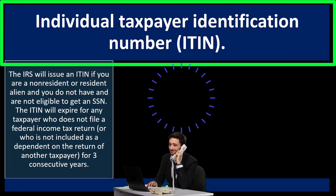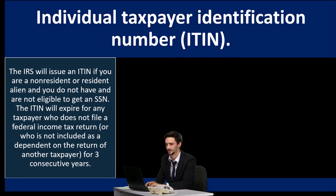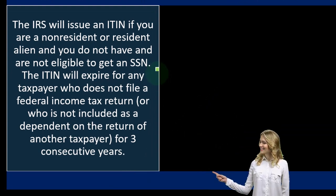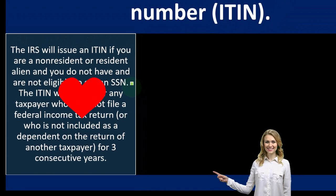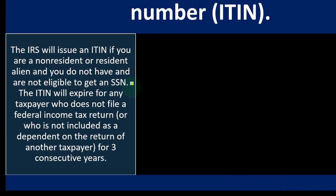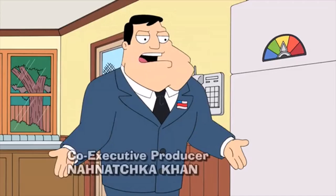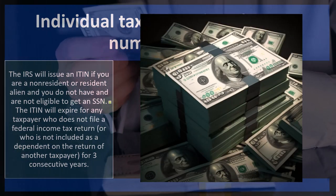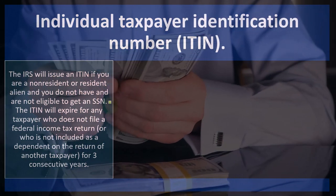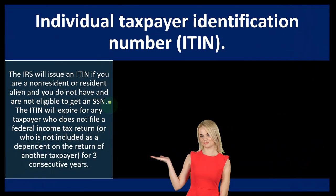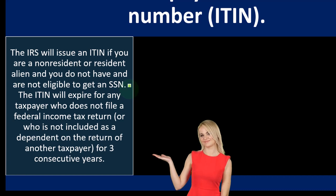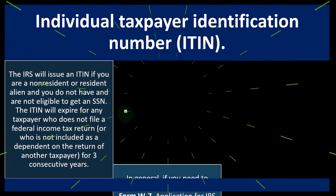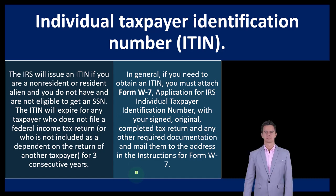Individual Taxpayer Identification Number, otherwise known as an ITIN — the IRS will issue an ITIN if you are a non-resident or resident alien and you do not have and are not eligible to get an SSN. The SSN is the default number for individual reporting on the 1040, but if you don't have one, the IRS still wants to know who you are. The ITIN will expire for any taxpayer who does not file a federal income tax return, or who is not included as a dependent on another taxpayer's return, for three consecutive years.